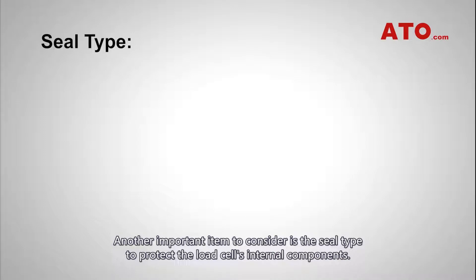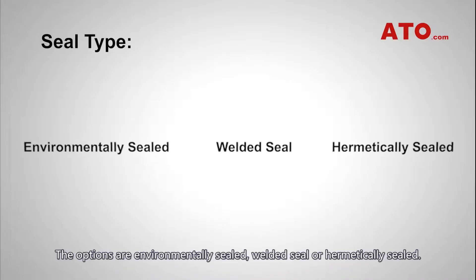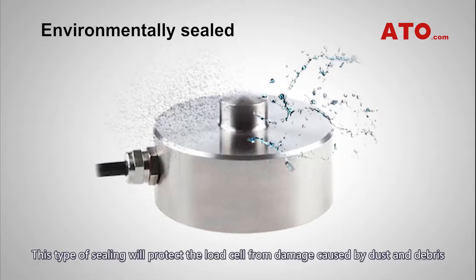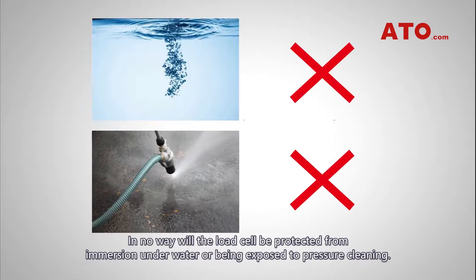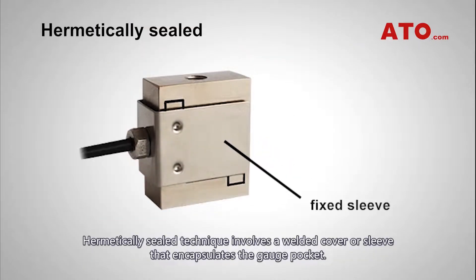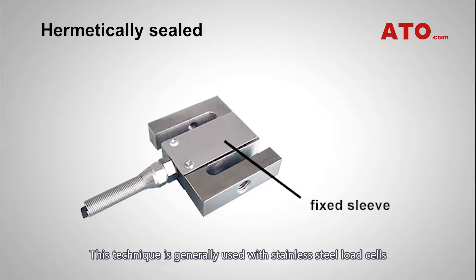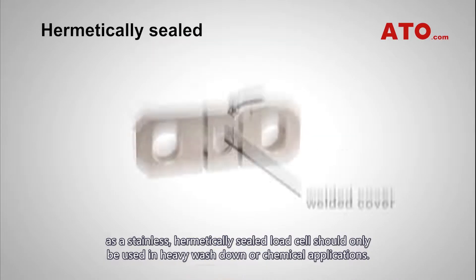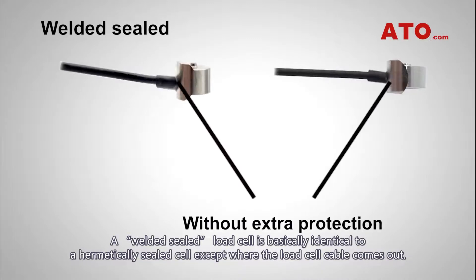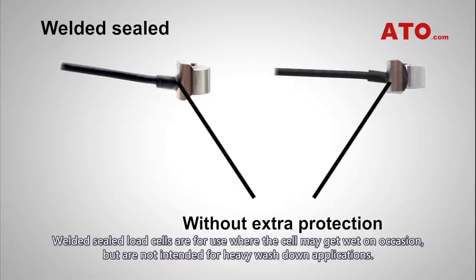Another important item to consider is the seal type to protect the load cell's internal components. The options are environmentally sealed, welded seal, or hermetically sealed. Environmentally sealed: this type of sealing will protect the load cell from damage caused by dust and debris and moderate humidity caused by splashing of water. In no way will the load cell be protected from immersion underwater or being exposed to pressure cleaning. Hermetically sealed technique involves a welded cover or sleeve that encapsulates the gauge pocket. This technique is generally used with stainless steel load cells, as a stainless hermetically sealed load cell should only be used in heavy wash-down or chemical applications. A welded seal load cell is basically identical to a hermetically sealed cell except where the load cell cable comes out. Welded seal load cells are for use where the cell may get wet on occasion but are not intended for heavy wash-down applications.